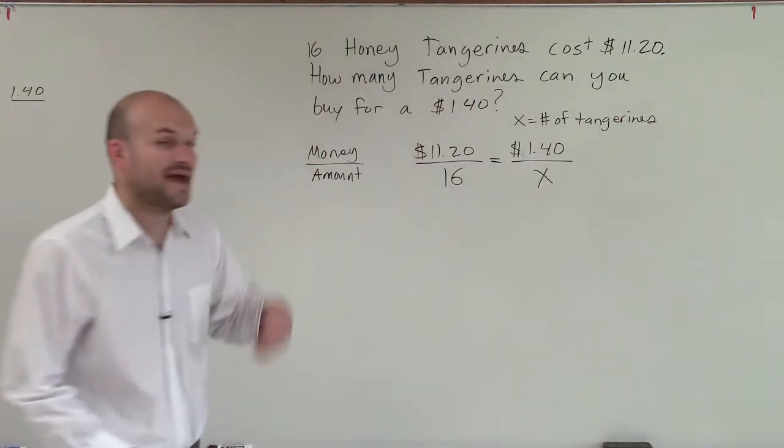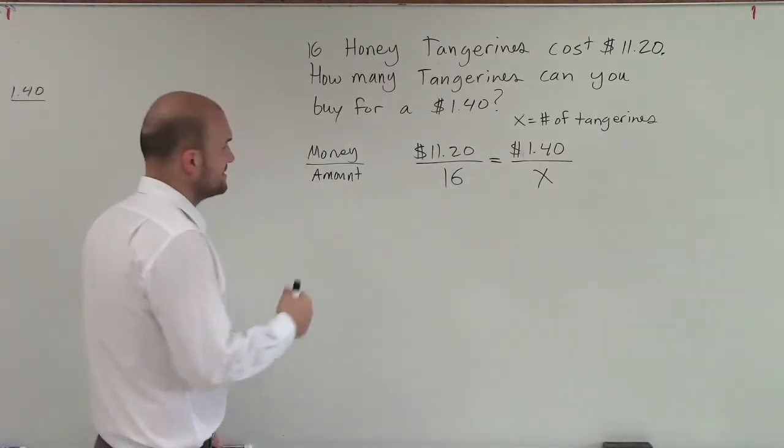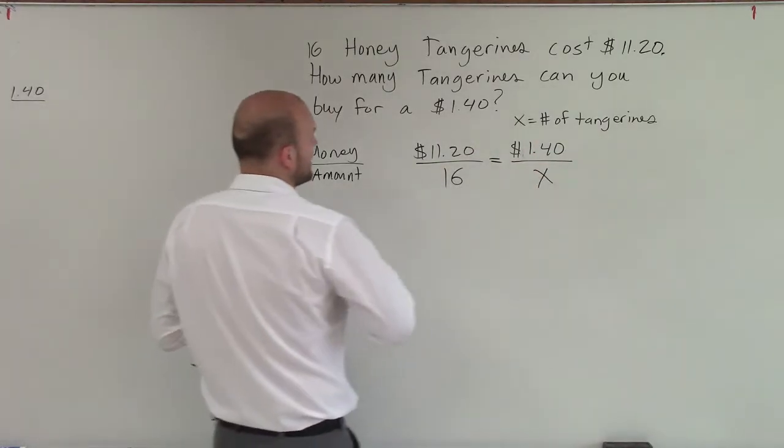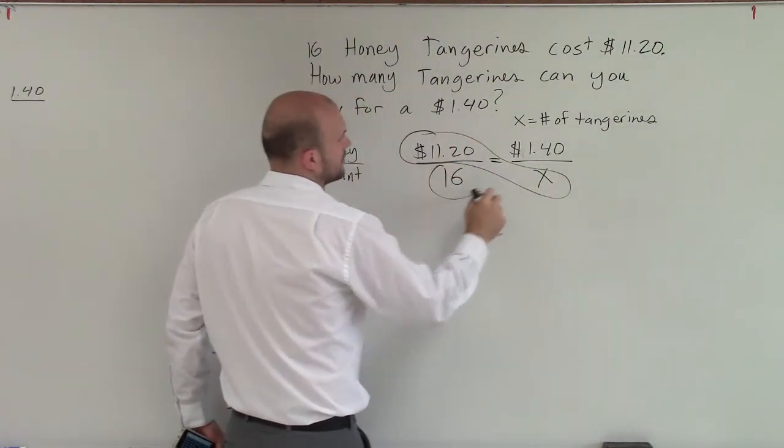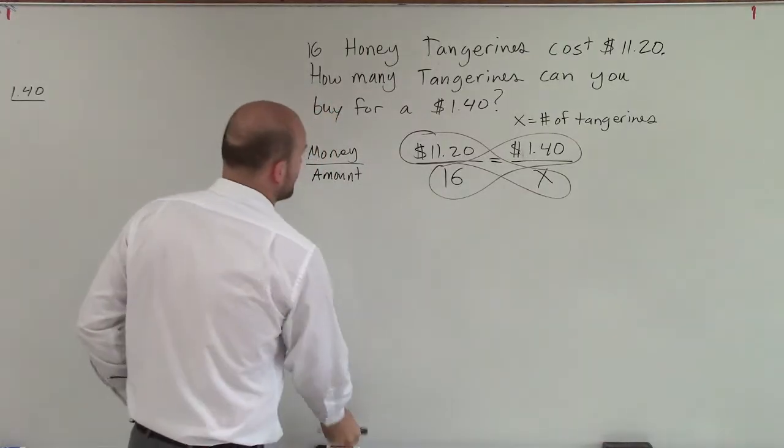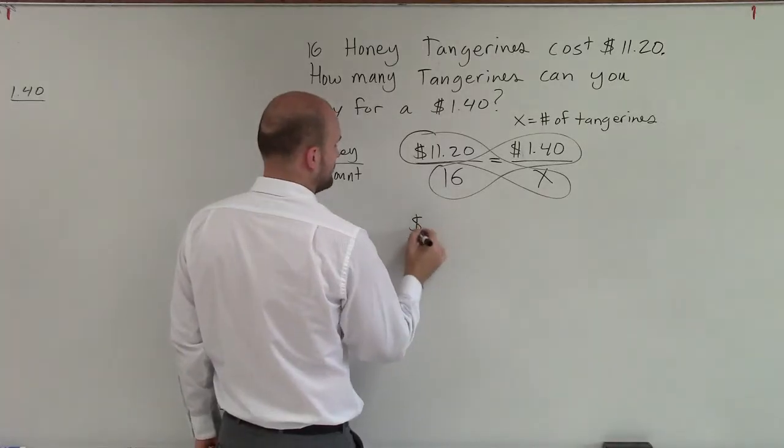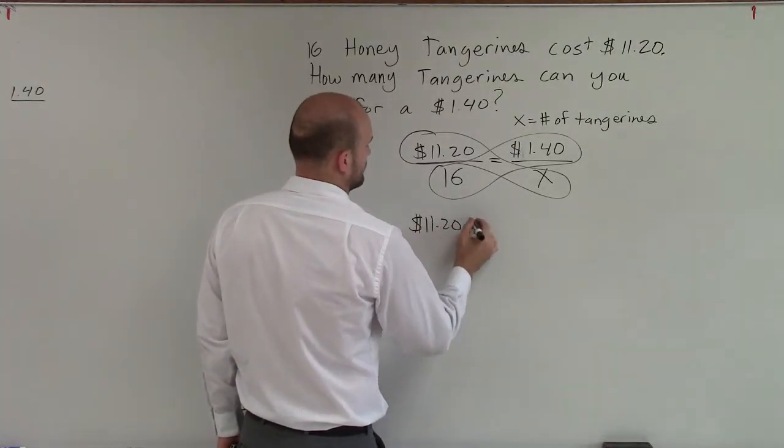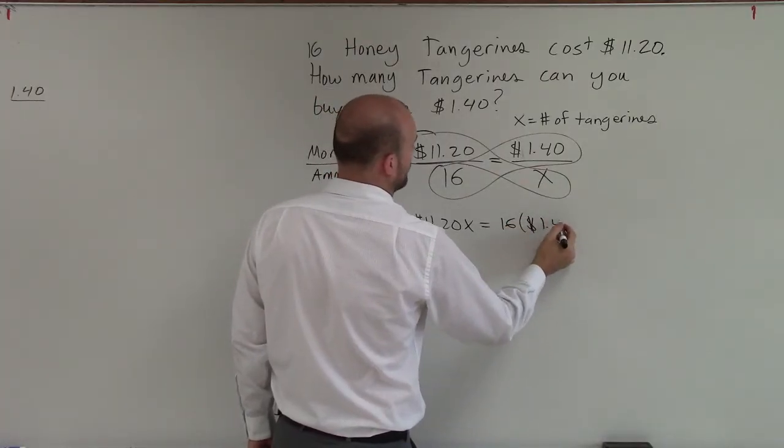All right, so now we have a proportion. We have a ratio equal to another ratio. So when we're dealing with proportions, it's very helpful. A lot of students like to go back to your cross multiplication. So by cross multiplication, I'll have $11.20 times x equals 16 times $1.40.